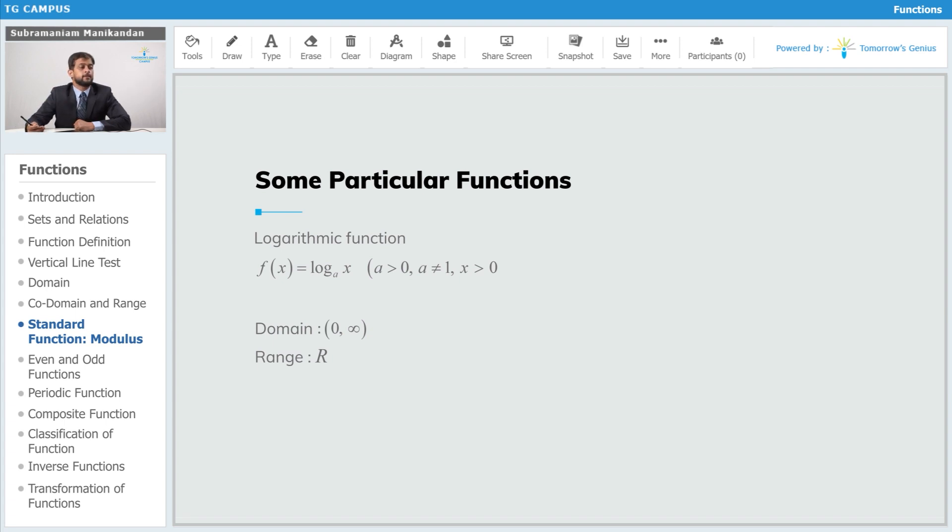And then for higher values of x, like for example x equals 10,000 or higher values, the value of the logarithm of the function also increases. However, it increases at a much slower rate.